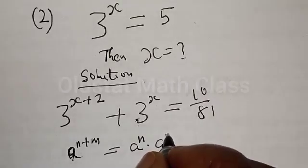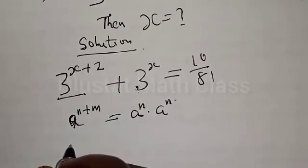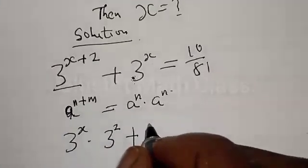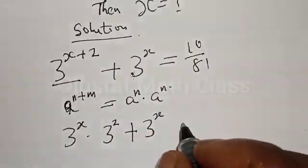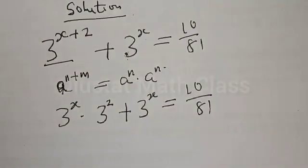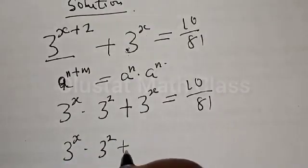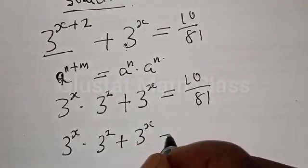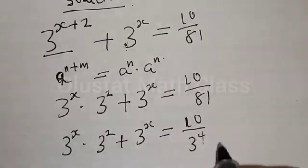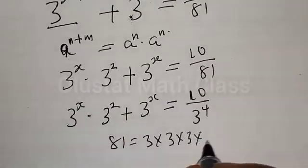Therefore this can be transformed: 3 raised to power x, multiplied by 3 raised to power 2, plus 3 raised to power x, is equal to 10 divided by 81. Then we have 3 raised to power x multiplied by 3.